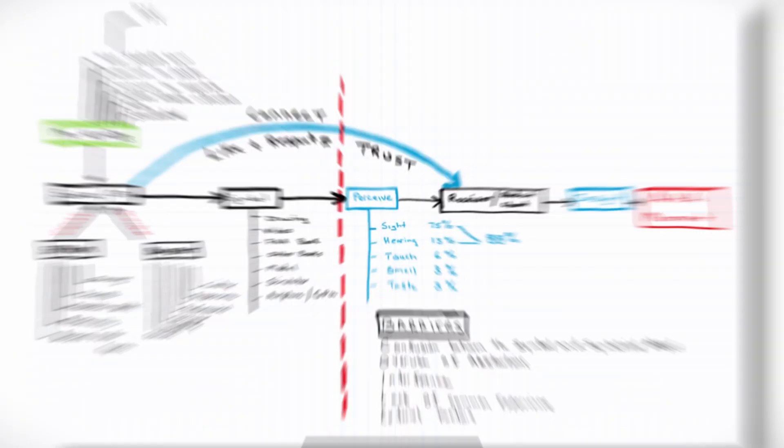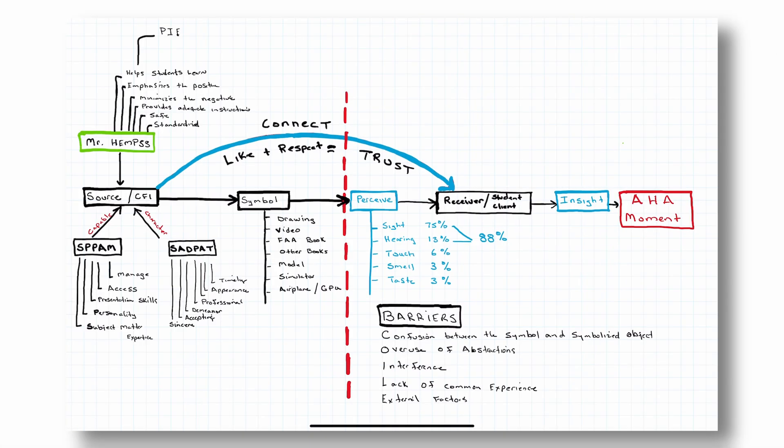The FAA has always gave us a model where they work with. It says we as the CFI, we're the source. The CFI is the source, and of course we provide a symbol. And as we provide a symbol, we provide that to the receiver. So the FAA's model looks something like this: we're the source, the CFI. We of course provide a symbol, and we provide that symbol to the receiver, which is our student, our client, our applicant, however we want to look at that process.